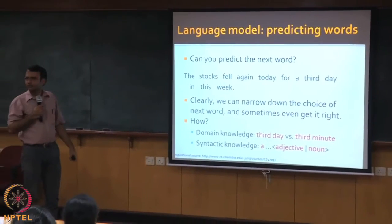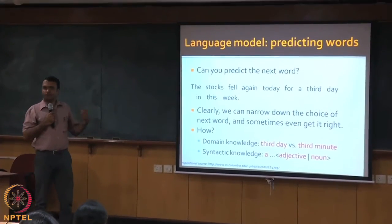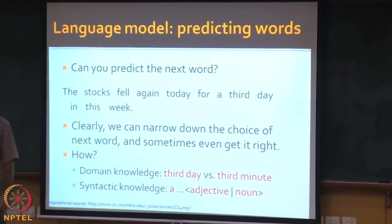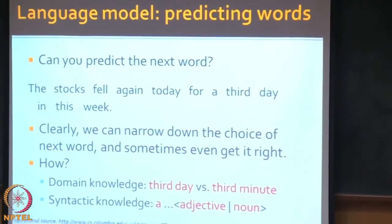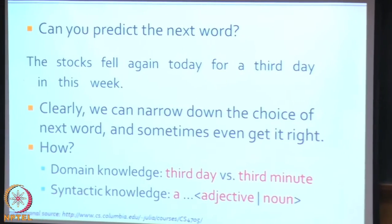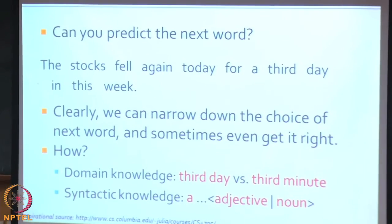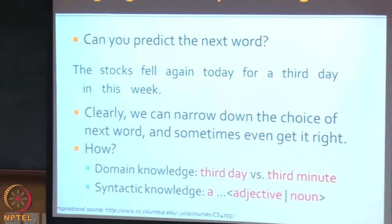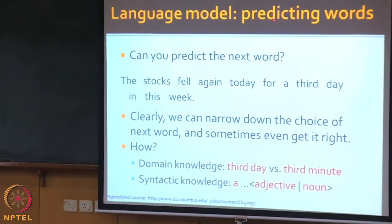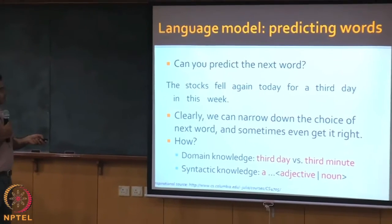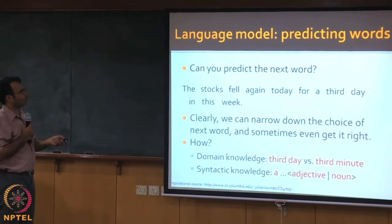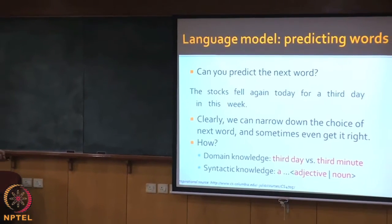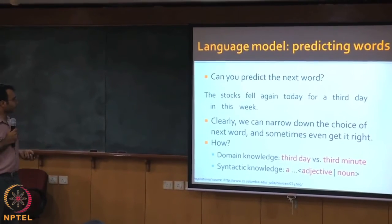But how do we do that? We do that based on several types of knowledge. We have domain knowledge — for example, 'third day' versus 'third minute.' You didn't say 'third minute' because you know that when you read news about stocks, it's day-to-day, not minute-to-minute news. And then syntactic knowledge: 'third' is an adjective and you know that what is coming next is a noun. Because of that, you know what word is coming next.